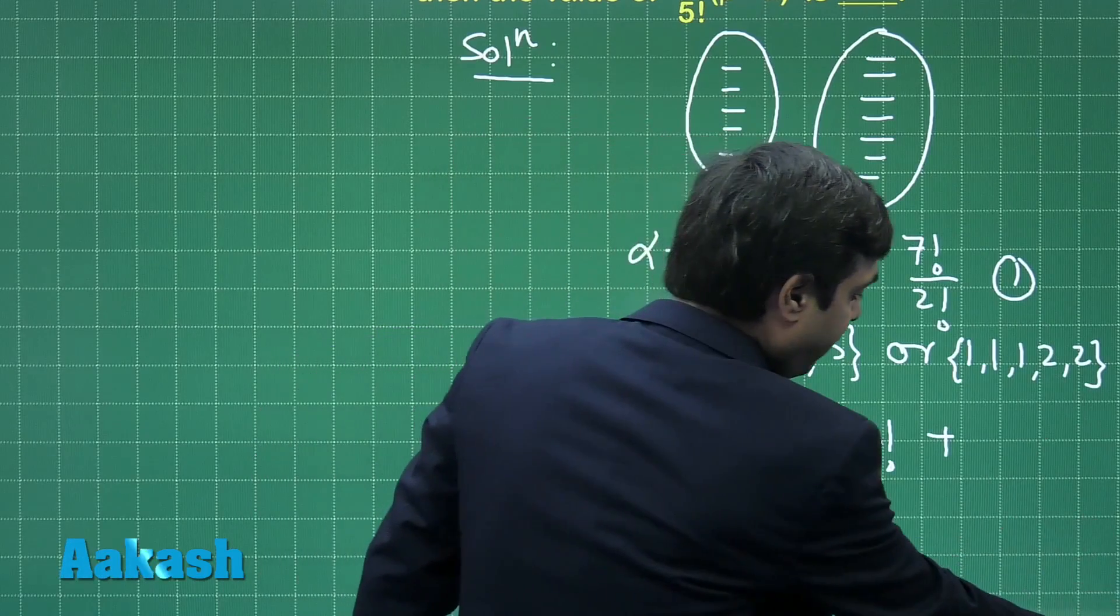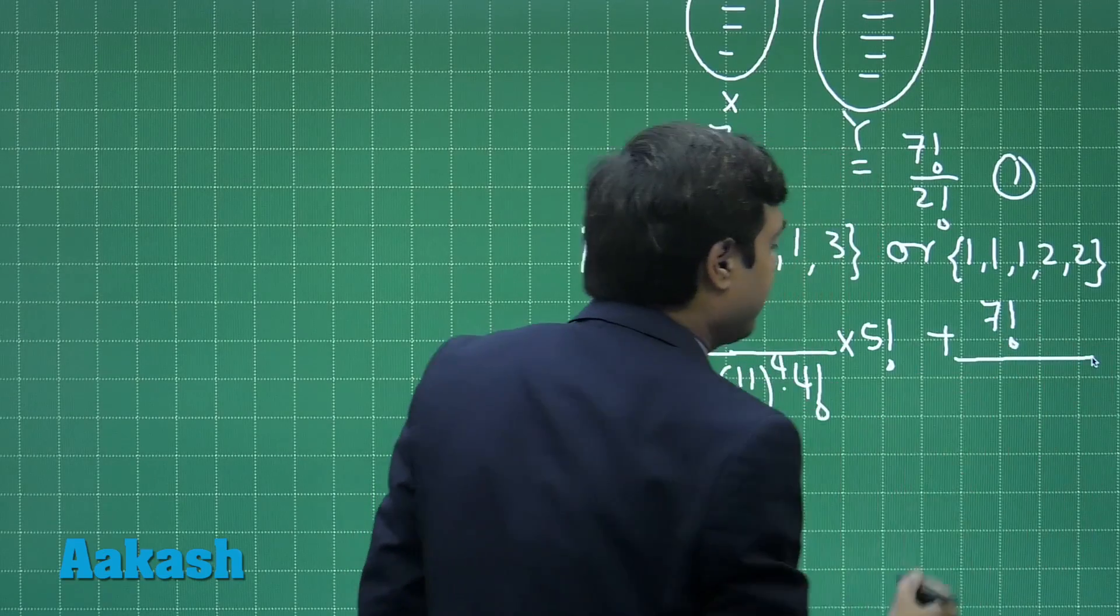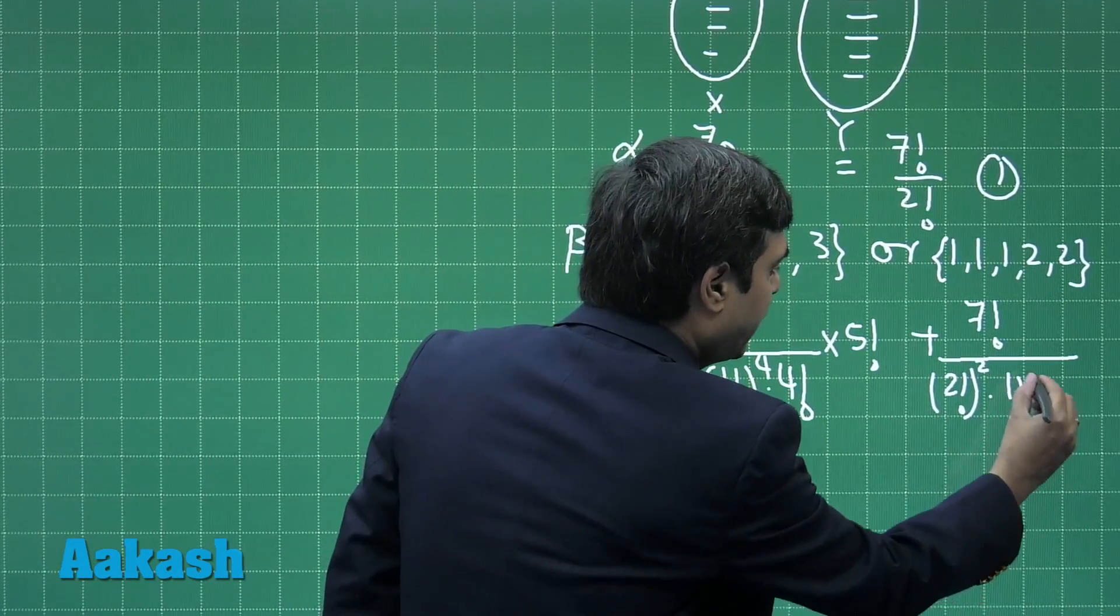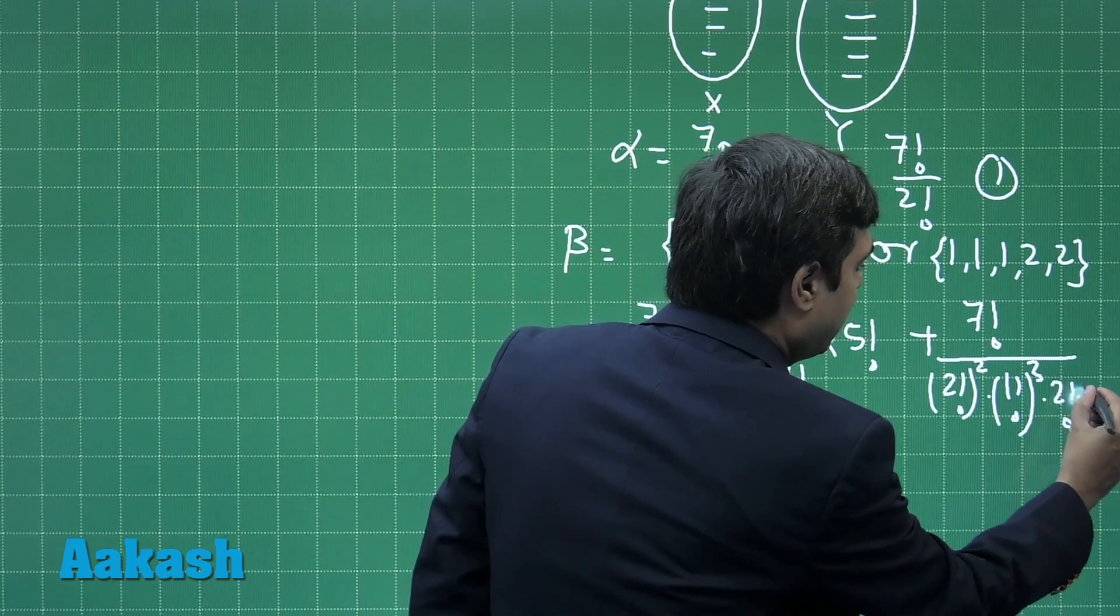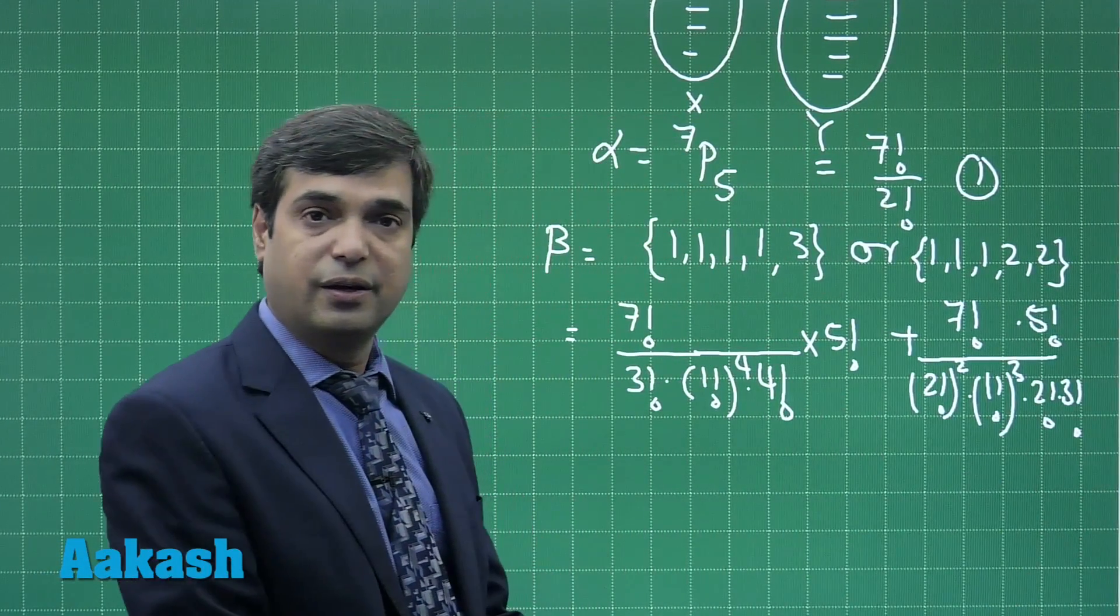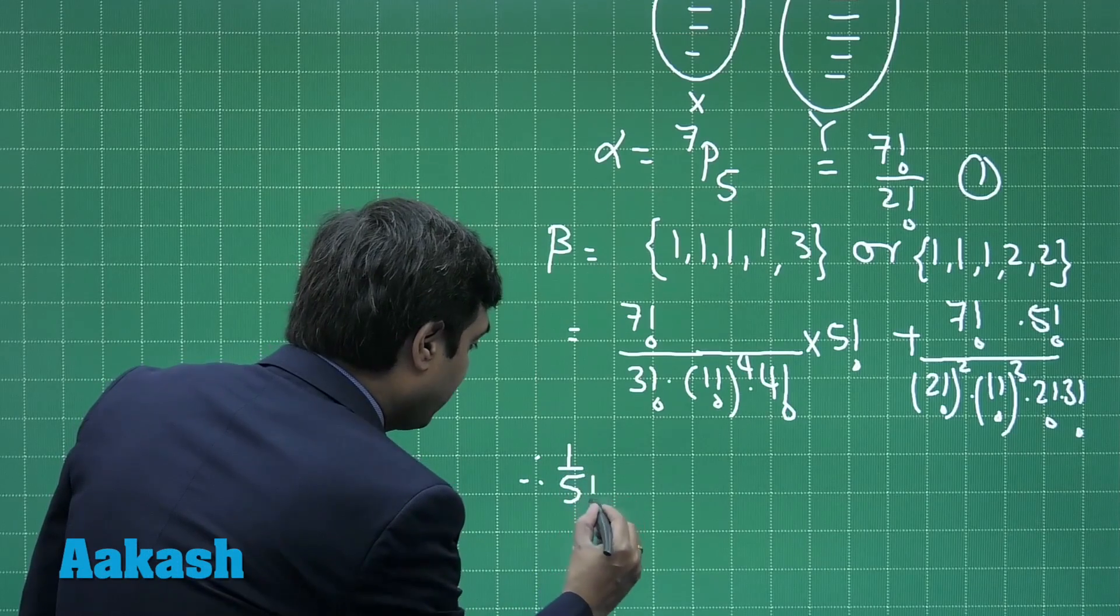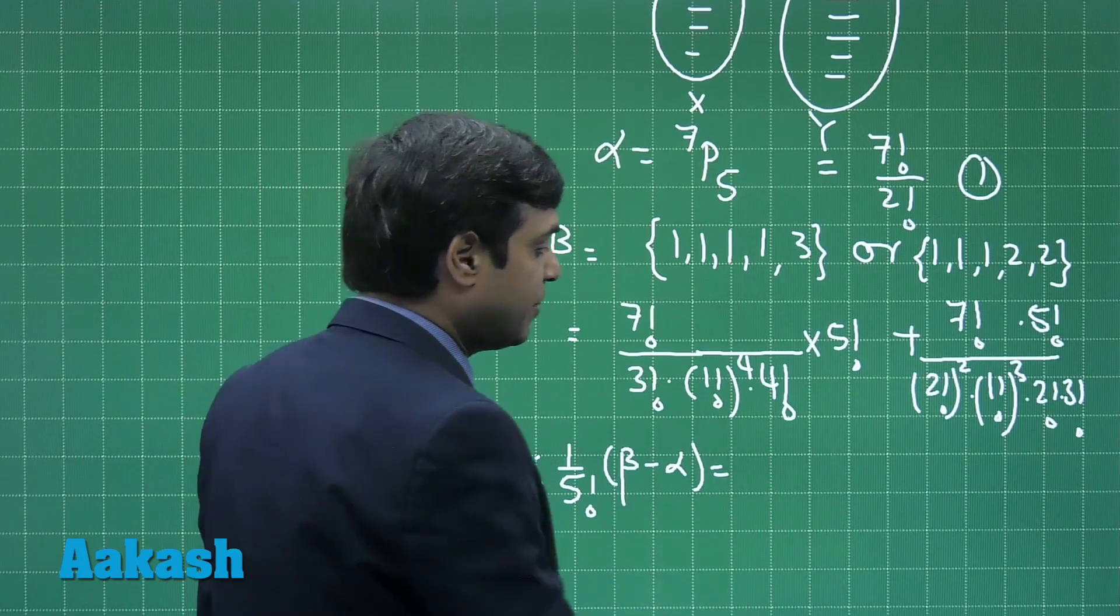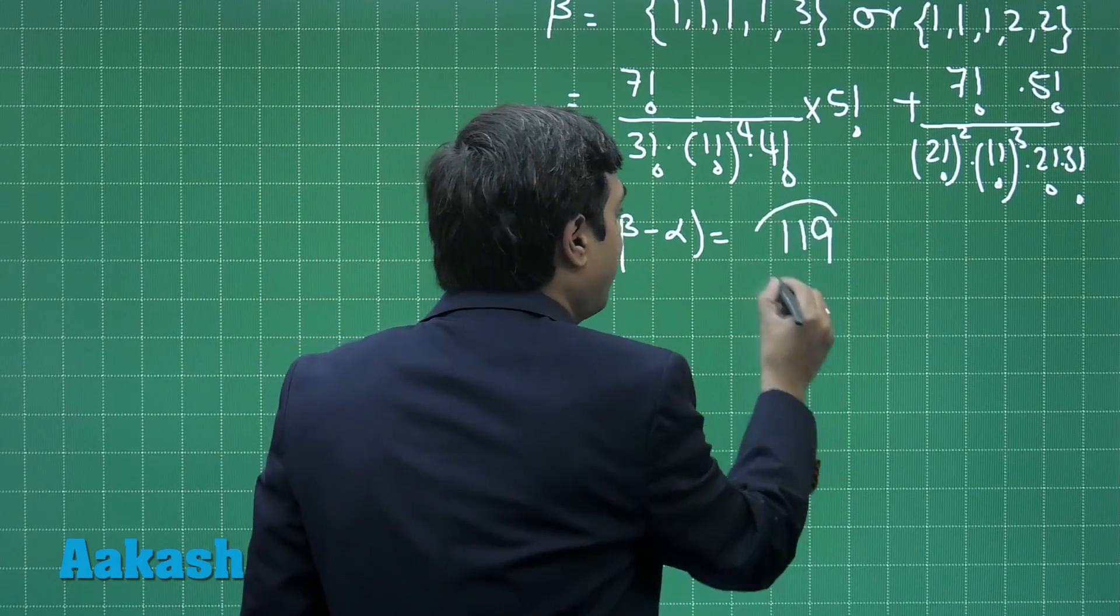For the second one we will have 7 factorial divided by 2 factorial whole square, 1 factorial whole cube, multiplied with 2 factorial, 3 factorial and in numerator arranging in 5 factorial ways. This is our beta. What they have asked for is 1 upon 5 factorial multiplied with beta minus alpha.